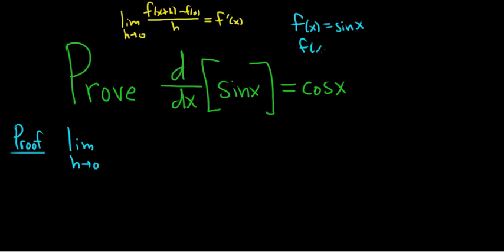So f of x plus h, well all that means is you replace all of the x's with x plus h. So it's sine of x plus h. So we have sine of x plus h. That's our f of x plus h.